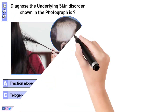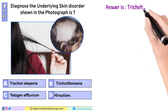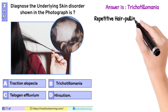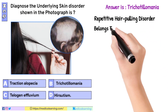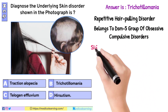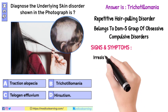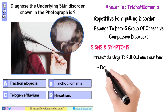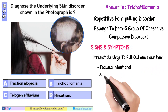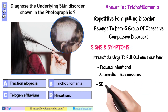In this question the answer is Trichotillomania — a repetitive hair pulling disorder that belongs to the DSM-5 group of obsessive-compulsive disorders. Signs and symptoms include an irresistible urge to pull out one's own hair, which may be focused and intentional, automatic or subconscious, and associated with a sense of pleasure.